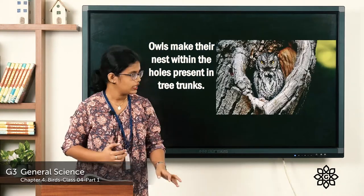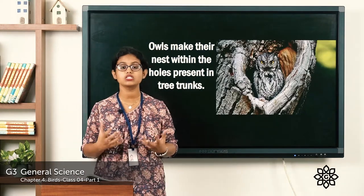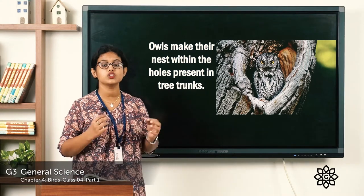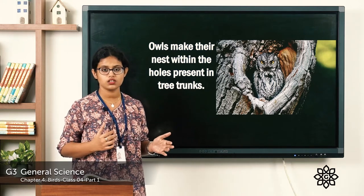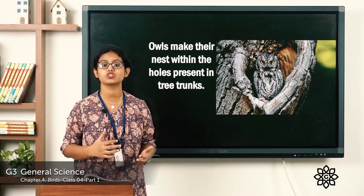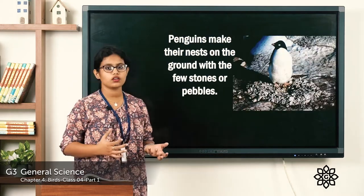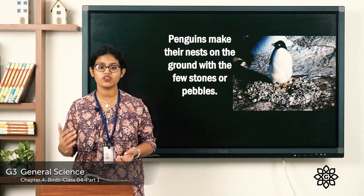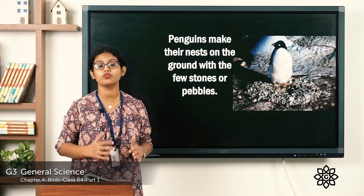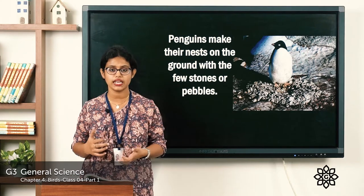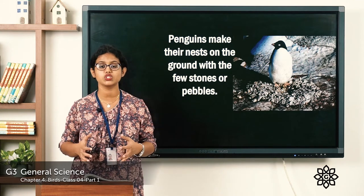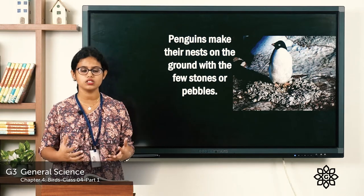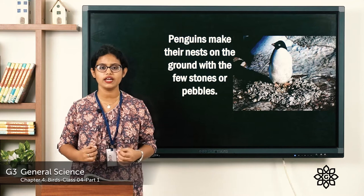The owl makes its nest in the holes present in the tree trunk. Next, birds like the peahen, penguin, and flamingo build their nest on the ground. Penguins build their nest on the ground using pebbles or stones. So those are examples of different birds and their nests.